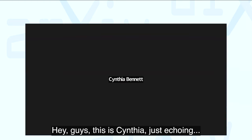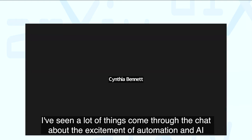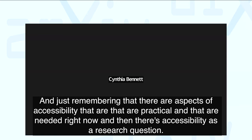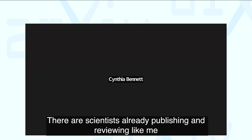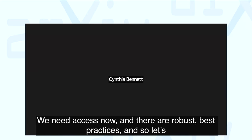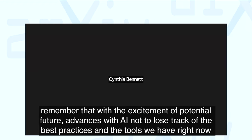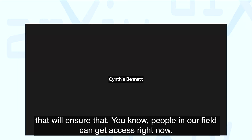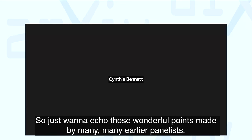This is Cynthia, just echoing — I've seen a lot of things in the chat about excitement around automation and AI. Just remembering that there are aspects of accessibility that are practical and needed right now, and then there's accessibility as a research question. There are scientists already publishing and reviewing — like me and many other blind people and people with disabilities who've commented — we need access now. There are robust best practices already. With the excitement of potential future AI advances, let's not lose track of the best practices and tools we have right now that will ensure people in our field can get access.